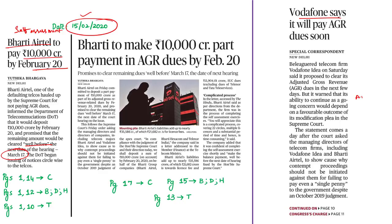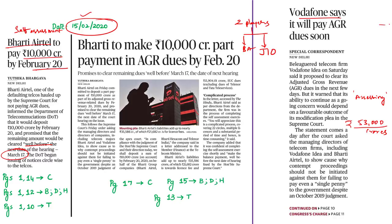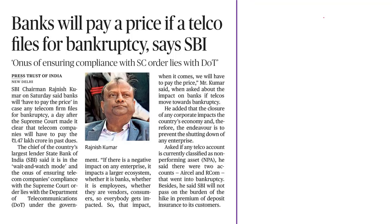Vodafone Idea said it will pay its AGR dues as soon as possible and gave the same reason — that it was currently assessing the amount based on recent orders. Vodafone's dues are estimated to be over 53,000 crores. However, given Vodafone's financial position, it may not be able to pay these dues, and analysts have raised concerns that India might become a two-private-player market with only Bharti Airtel and Reliance Jio in the future.